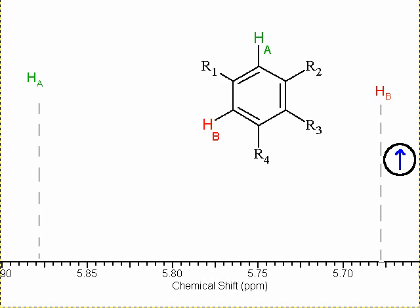We can imagine that the red proton Hb can be spin up and therefore aligned with an external magnetic field. As a result of this, Ha will experience slightly more magnetic influence than it did before, because it experiences both the external magnetic field and the magnetic field of the nearby proton. So its peak will be shifted to a slightly higher value.